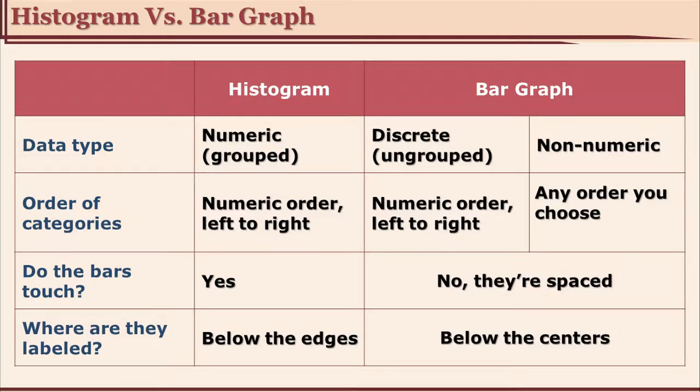Let us see the commonalities and the differences in histogram and bar graph. What type of data can be represented using histogram? It is numeric, grouped data. The data has to be grouped; ungrouped data cannot be represented here. For histogram we need class interval and we also need its midpoint.